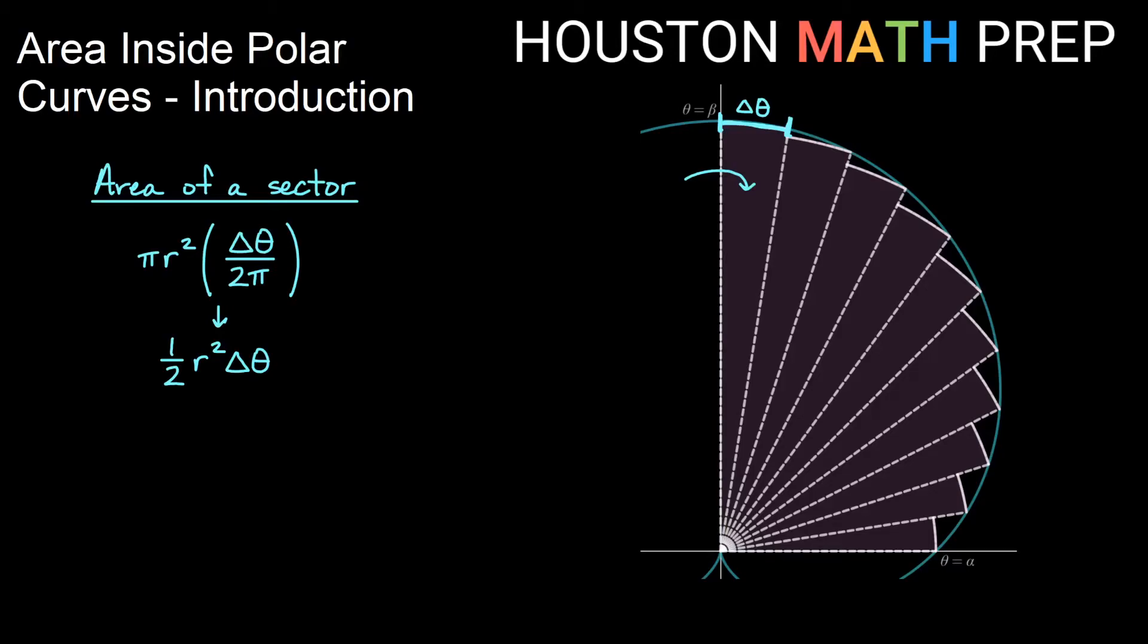Now the r in our formula here is just going to be the length of that sector, in other words, my function of theta thinking about making this sector as far out as our curve f(theta) is. So our r is really going to be f(theta), just like our height in rectangular coordinates was f(x). So we have this formula 1 half times our function of theta squared, delta theta.